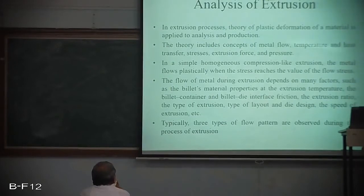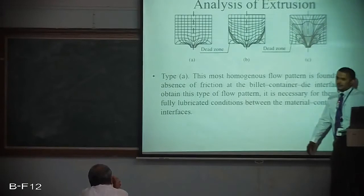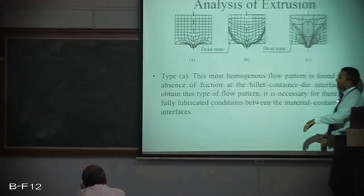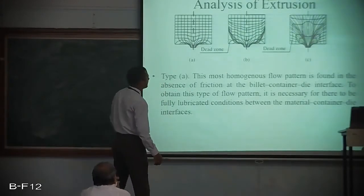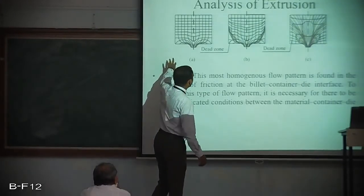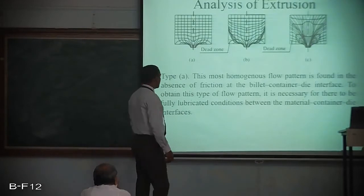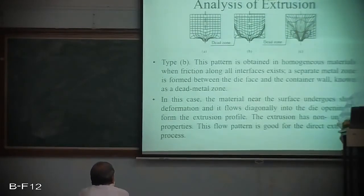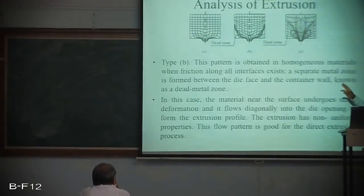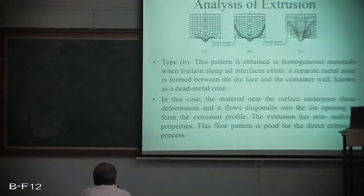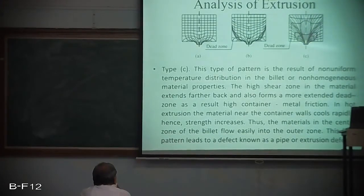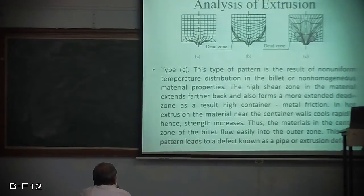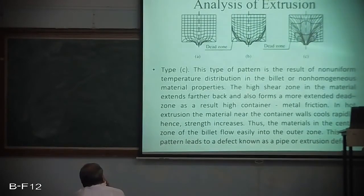Next we studied the analysis of extrusion, discussing three types of metal flow. Type A occurs in a homogeneous flow pattern found in the absence of friction at the billet-container-die interface, requiring full lubrication. Type B occurs in homogeneous material when friction along the interfaces exists, forming a dead metal zone between the die face and container wall. Type C results from non-uniform temperature distribution or non-homogeneous material properties, with a high shear zone extending farther back due to high container-metal friction.